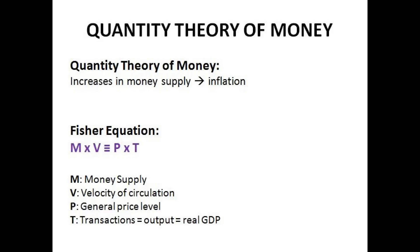This relates to the quantity theory of money, which states that an increase in the money supply in an economy will lead to inflation. It's supported by the Fisher equation: M times V equals P times T, where M is the money supply, V is the velocity of circulation, P is the general price level, and T is transactions — equivalent to output or real GDP. So if we increase the money supply, unless we decrease the velocity of circulation or increase transactions and real GDP, we're going to see a rise in the price level.